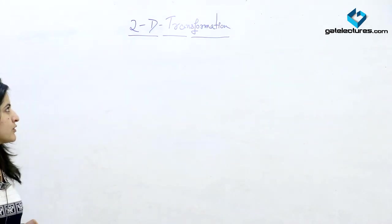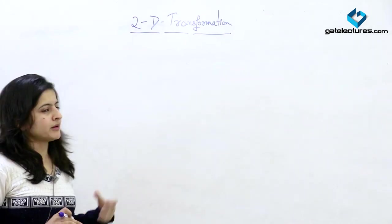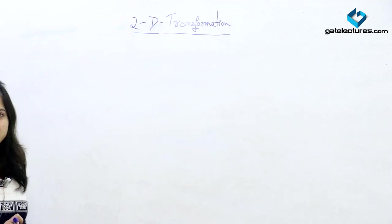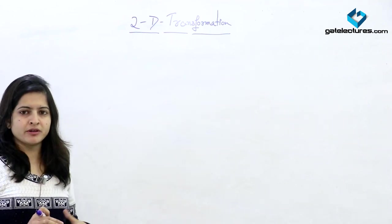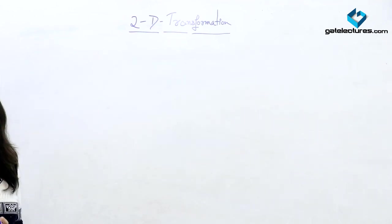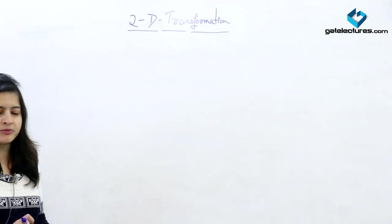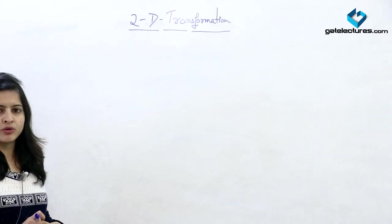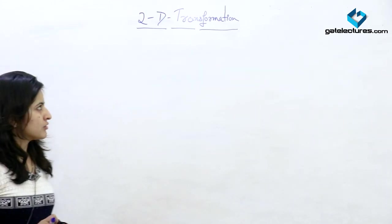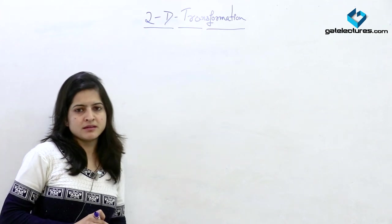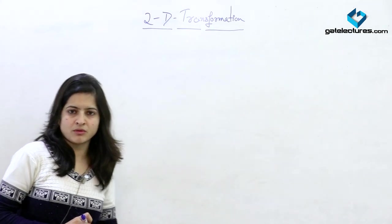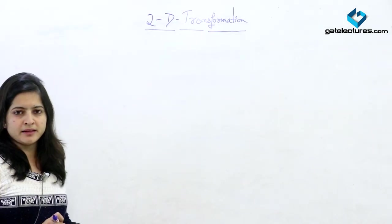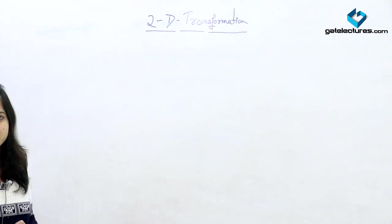Hello friends, today we are going to see a topic: 2D transformations. A transformation means a change. In computer graphics, we are changing the location of an object, we can change the size of the object and can rotate it in the coordinate system. These changes are called transformations. When we are applying these changes in a 2D plane, then it is called 2D transformations.